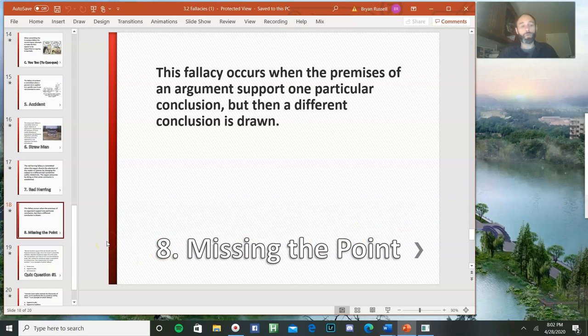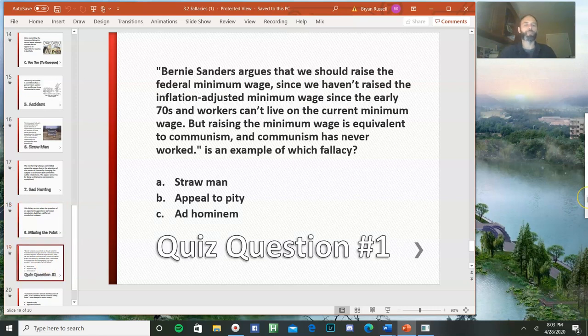So now that we've covered these eight fallacies and different varieties of some of them, we're going to get to our quiz question. So quiz question one: Bernie Sanders argues that we should raise the federal minimum wage since we haven't raised the inflation-adjusted minimum wage since the early 70s and workers can't live on the current minimum wage. But raising the minimum wage is equivalent to communism, and communism has never worked. That argument is an example of which fallacy? Is it A, a straw man, B, an appeal to pity, or C, an ad hominem?